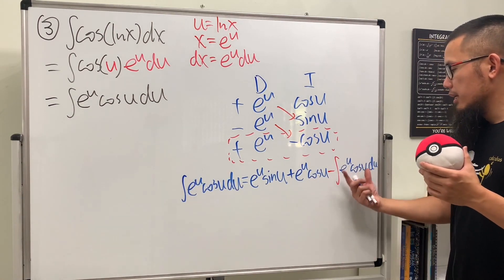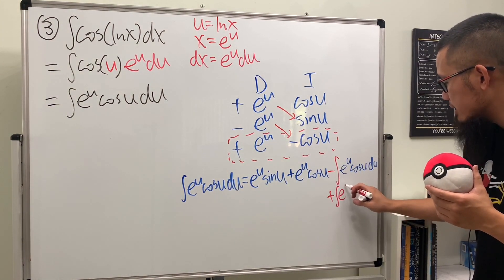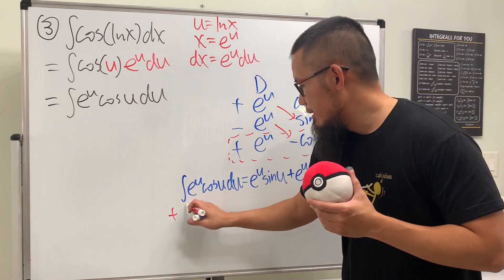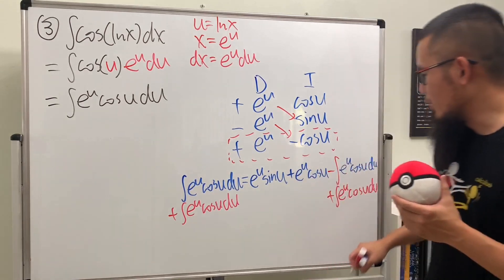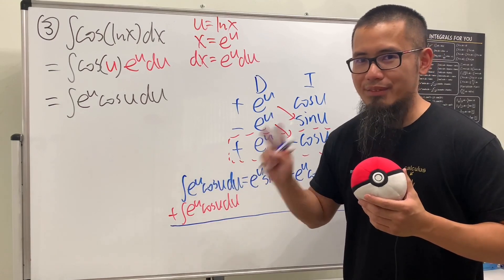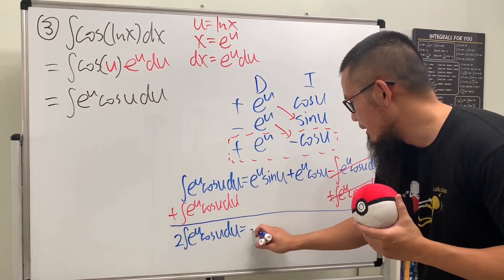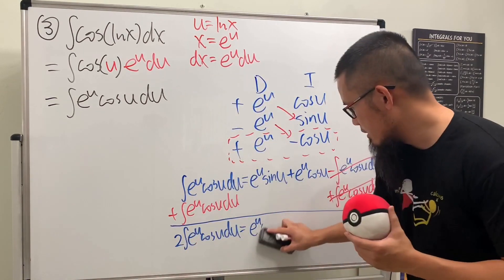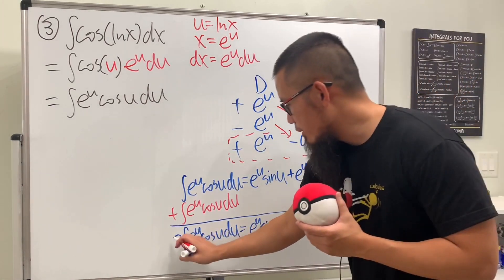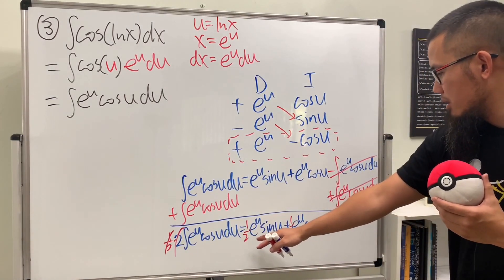This integral and that integral are the same. We add the integral of e to the u cosine u du to both sides, so we have two times the integral of e to the u cosine u du equals e to the u sine u plus e to the u cosine u. Then multiply everybody by one half, and we pretty much have the answer.